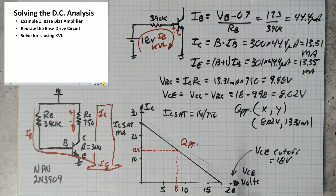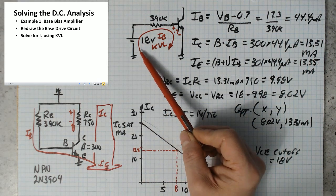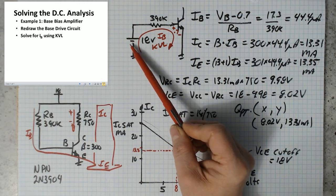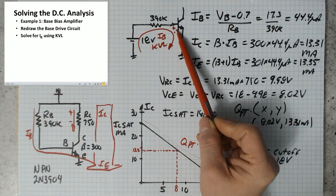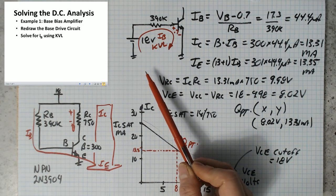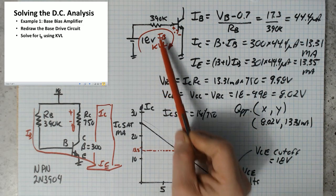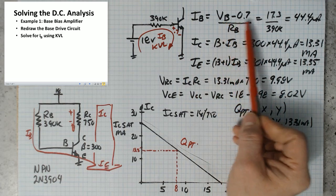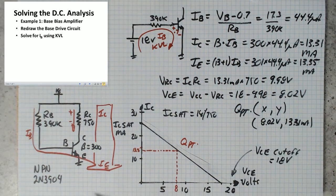Now this kind of makes sense. Another way that you can look at it is you can say, well, I started with an 18 volt source, 0.7 volts of it went here. So there was 17.3 volts that got dropped across some resistance. Which resistor is it? It's this one. So it's 17.3 over 390k.